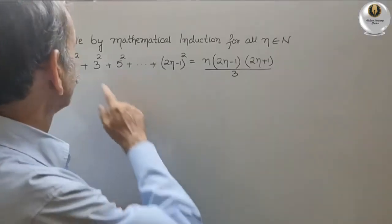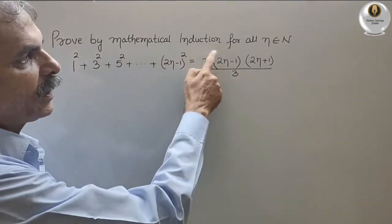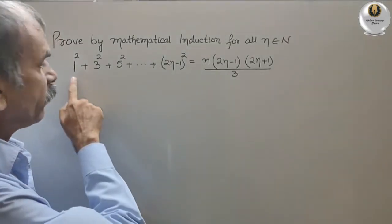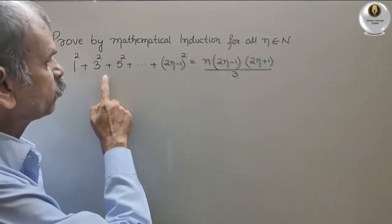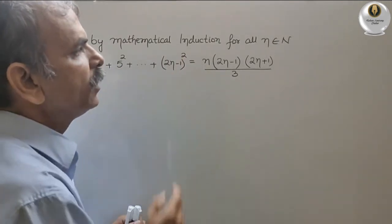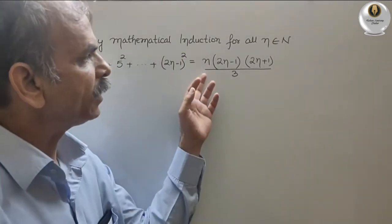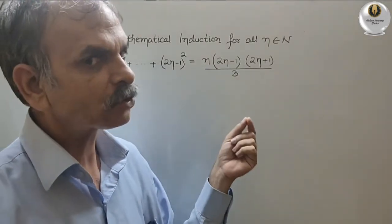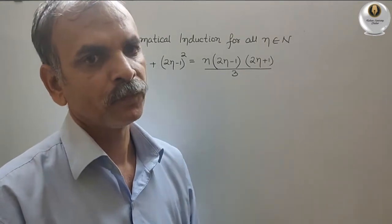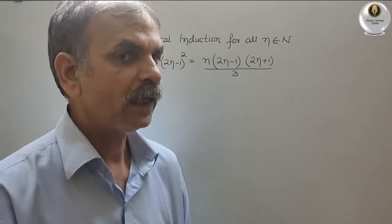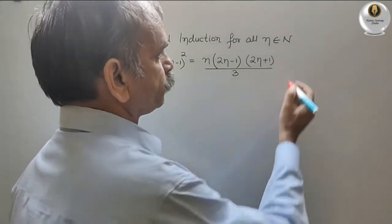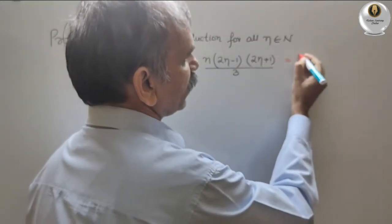The question is proof by mathematical induction for all n belonging to the natural numbers. What is given: 1² + 3² + 5² + ... + (2n−1)² = n(2n−1)(2n+1)/3. Whatever they have given, first we will take that as P(n).